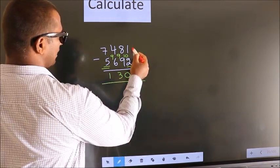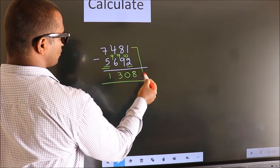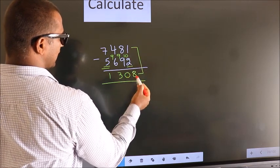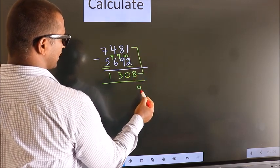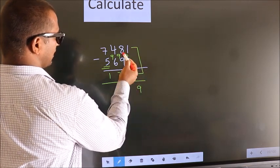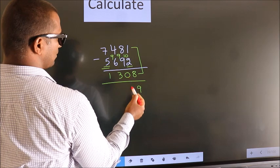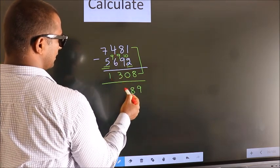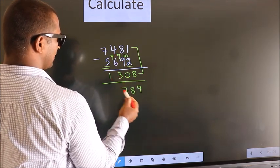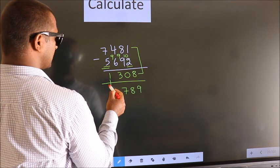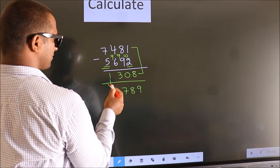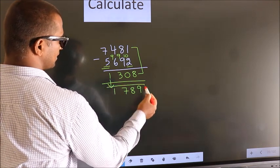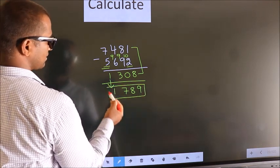Now add these 2. 1 plus 8 is 9, 8 plus 0 is 8, 4 plus 3 is 7. The first digit as it is, we write it down. So this is our answer: 1789.